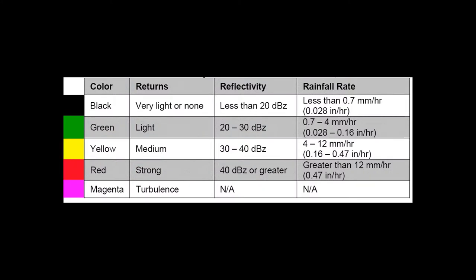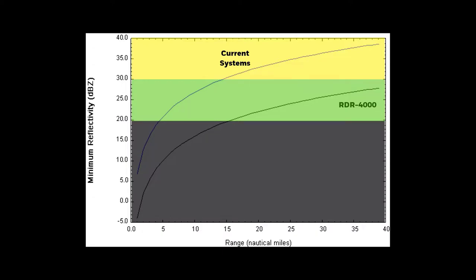Another observation pilots made when first using the new system was magenta turbulence indications in black areas. Black doesn't mean it's not raining — it's just raining below the 20 dBZ threshold the FAA set for green. With older radar, detecting turbulence below the green threshold required being about 3 nautical miles from the turbulence. Because the RDR 4000 is much more sensitive, it can detect turbulence at the same reflectivity level from about 15 nautical miles away. The turbulence detection capability is much more sensitive and accurate — learn to trust it.